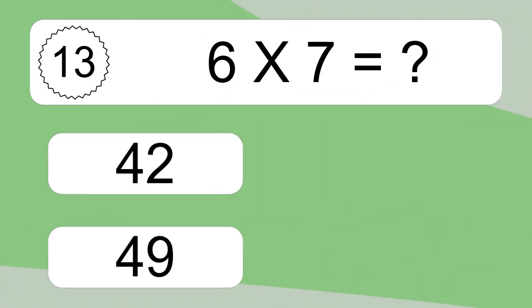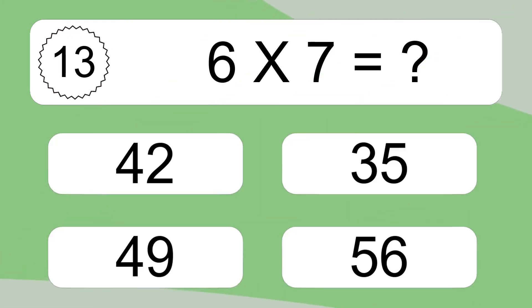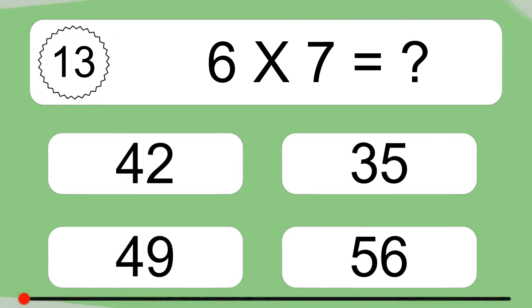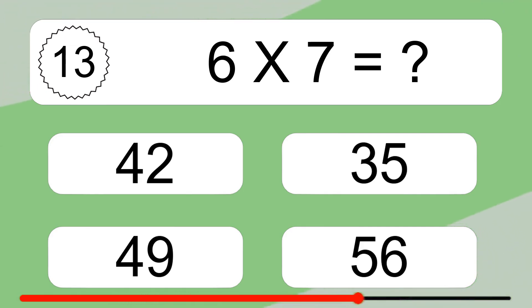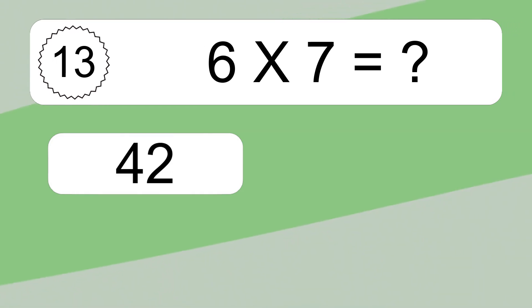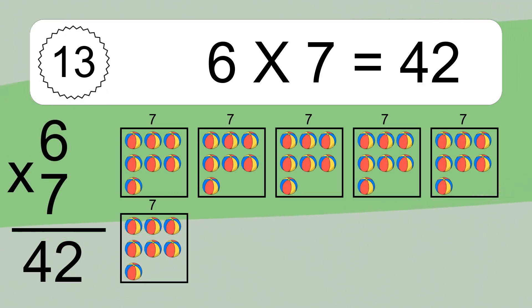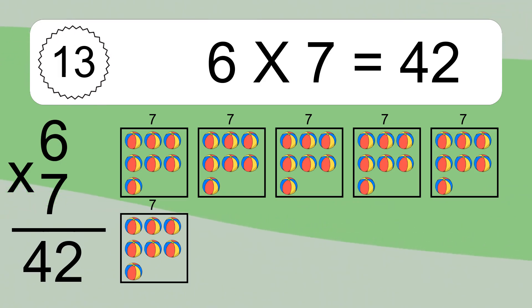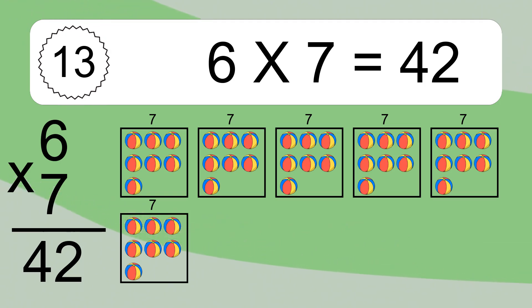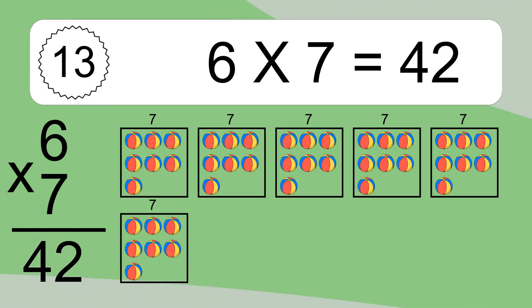6 times 7 equals what? 6 times 7 equals 42. We have 6 boxes, and each box has 7 colorful balls inside. If you count all the balls in all the boxes together, you will have 6 times 7 balls. This equals 42 balls.